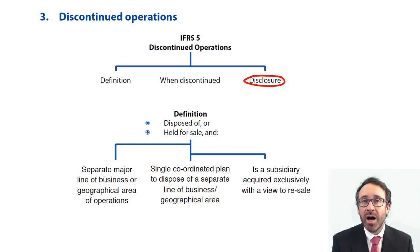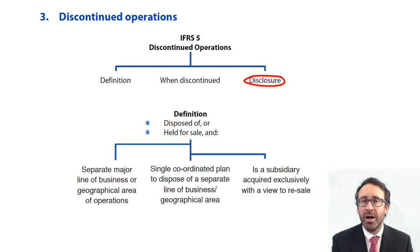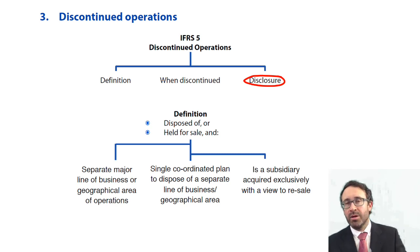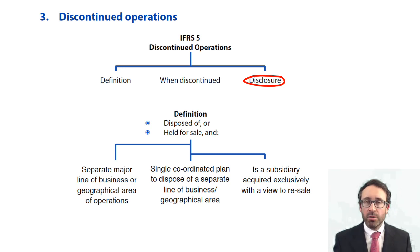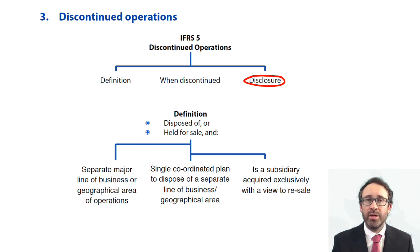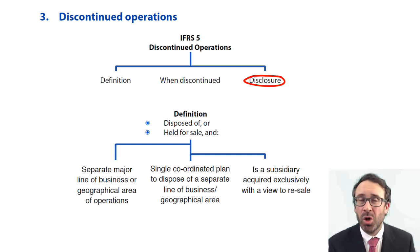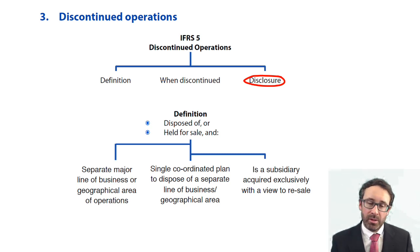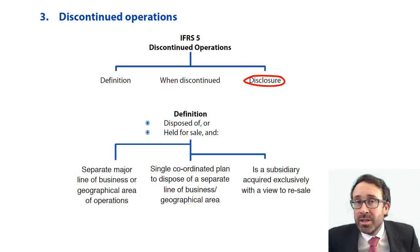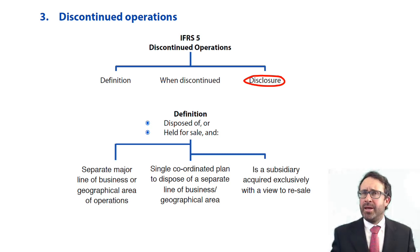So we need to be able to define what a discontinued operation is and then look at when it becomes discontinued, because when it's discontinued it can then be disclosed. To look at the definition, the easiest way is that if it's been sold, disposed of, or closed down, then it's discontinued — it no longer exists within your business.